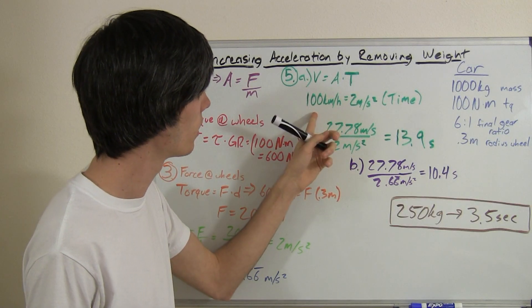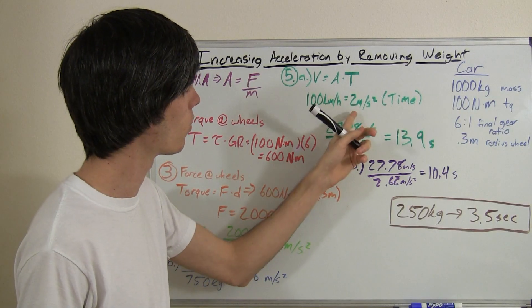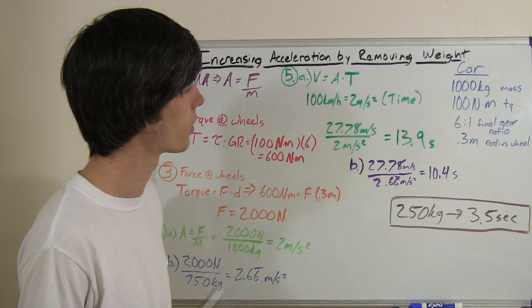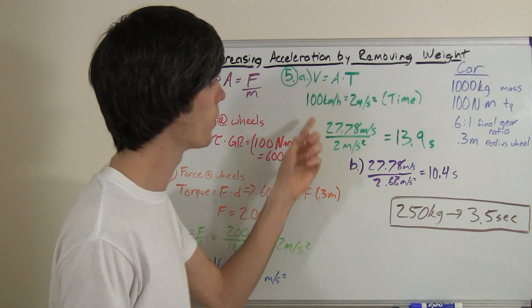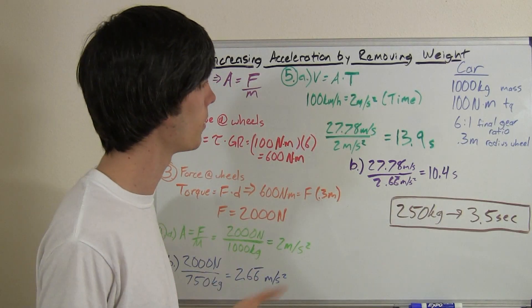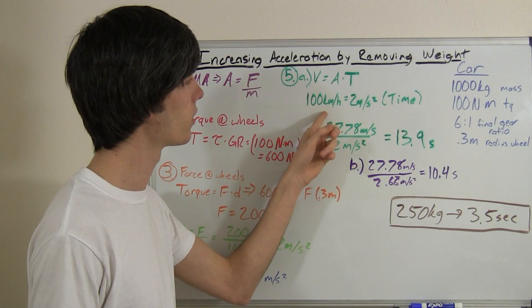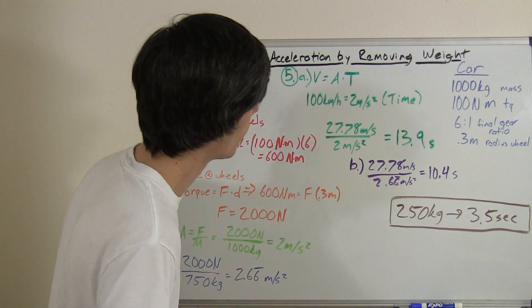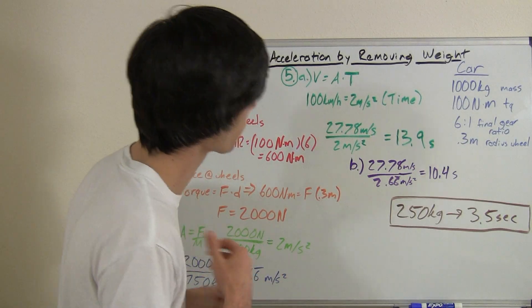So we've got velocity equals acceleration times time. We know our velocity. We want it to be 100 kilometers per hour. We know that our acceleration is going to be 2 meters per second squared. All we need to do is divide the two and we can get the time. So we have to convert 100 kilometers per hour to meters per second.